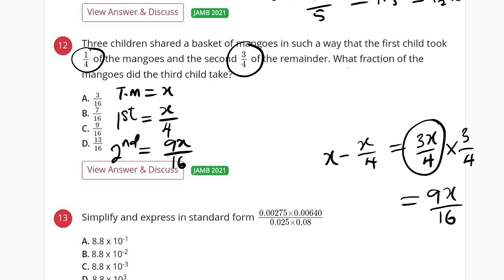And the question asks, what fraction of the mangoes did the third child get? Okay, to find that we are going to add the first and the second share and take it away from the total.